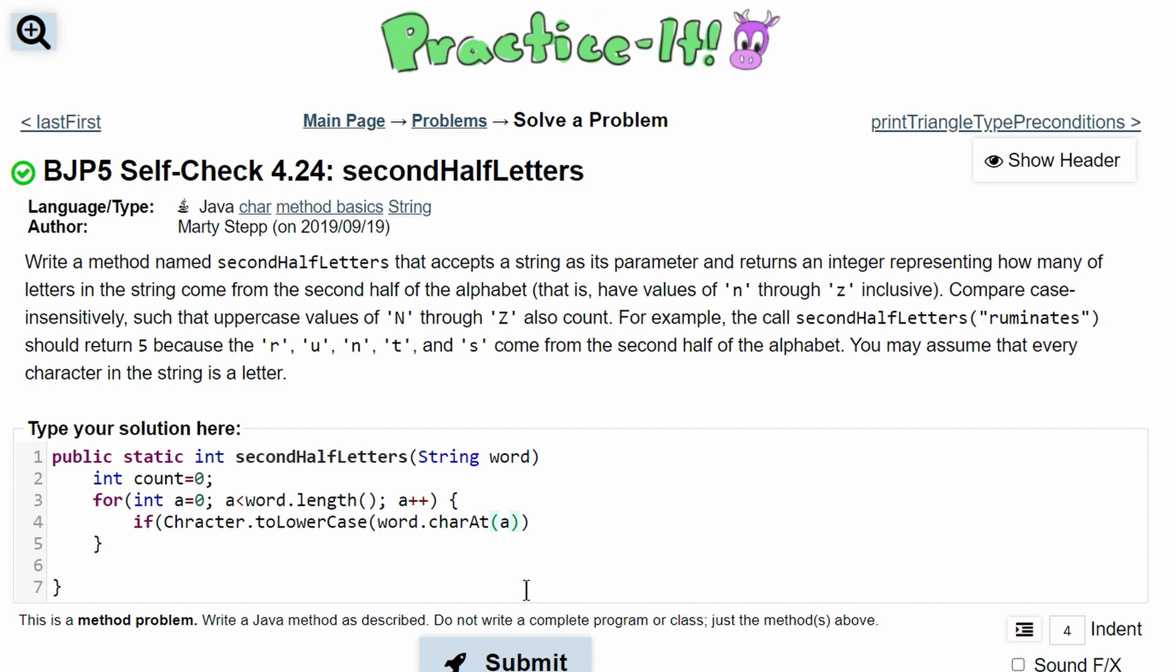Just to make sense. So we have if our Character.toLowerCase word.charAt(a) is greater than or equal to the character n. Then we are going to increment our count. If it's greater than, that means it's between n and the end of the alphabet, which is z. So we'll have greater than or equal to the character n.